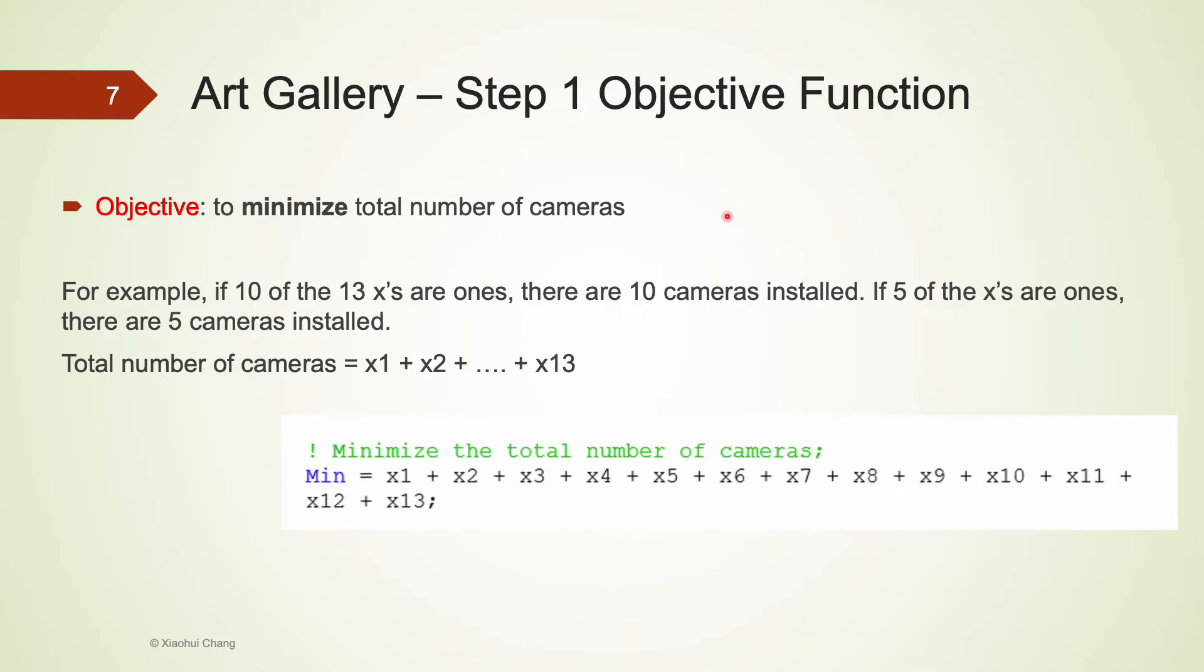Let's move on to the objective function. The management tries to minimize the total number of cameras installed in the gallery. We are using xi to represent whether a camera is installed or not. If 10 out of the xi are 1s and 3 are 0s, we will have a total of 10 cameras installed. So you can see that minimizing the total number of cameras is equivalent to minimizing the sum of all the xi. We use the min function in LINGO to specify the objective function.